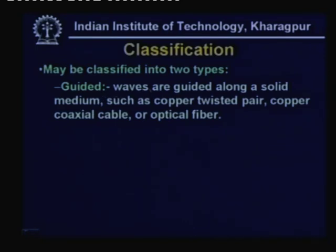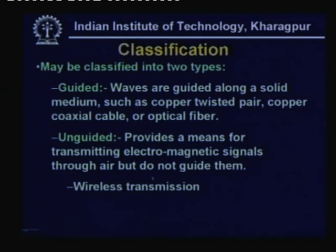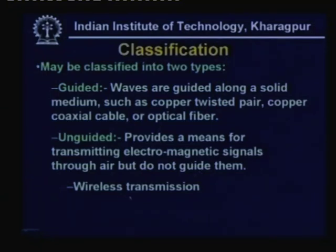The transmission media can be broadly classified into two types. In the first case we call it guided transmission media, where waves are guided along a solid medium such as copper twisted pair, copper coaxial cable, or optical fiber. For unguided media, it provides a means for transmitting electromagnetic signals through air but does not guide them. In such a case we are communicating through air, and this unguided transmission is called wireless transmission.